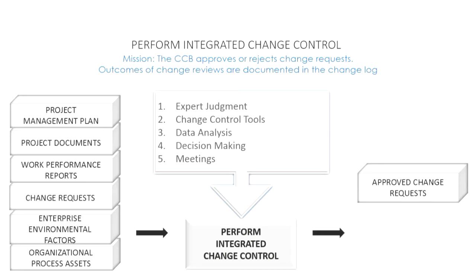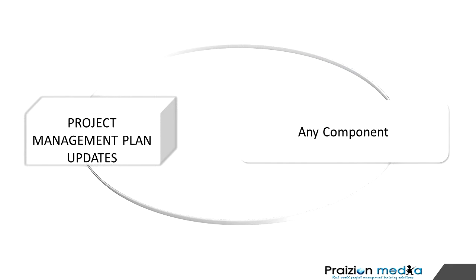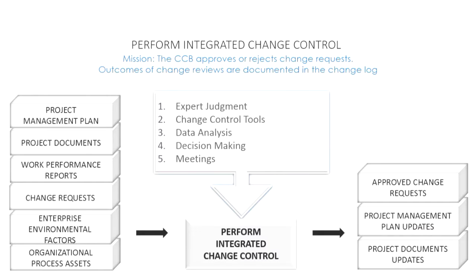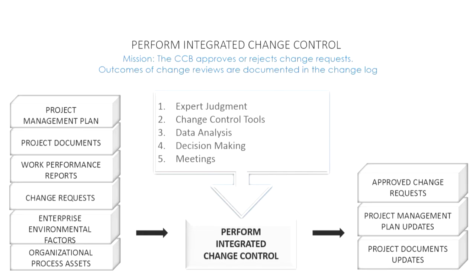Let's take a look at the outputs. The first is approved change requests — as you review change requests, you're either approving or rejecting them; those approved are called approved change requests. Next is project management plan updates, referring to any component of the plan that needs updating. Last is project documents updates, which contains a very important sub-output: the change log. It's not called out specifically, but it lives inside project documents — when you think about this process's outputs, the change log is the big one.